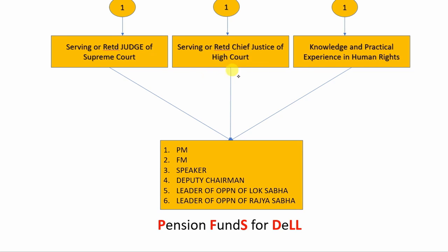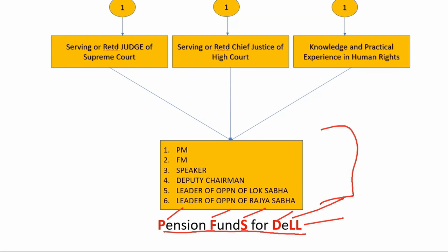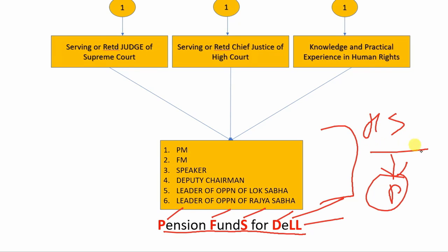Now we will see who appoints these members. I have made a mnemonic to remember this: 'Pension Funds for DEL' — P stands for Prime Minister, F for Finance Minister, S for Speaker, D for Deputy Chairman. Remember, there is no Vice President or Chairman of Rajya Sabha — there is the Leader of Opposition of Lok Sabha and the Leader of Opposition of Rajya Sabha. This committee recommends the name to the president, and the president appoints them by warrant under his hand and seal, meaning the appointment is authorized by the president who physically signs it himself.